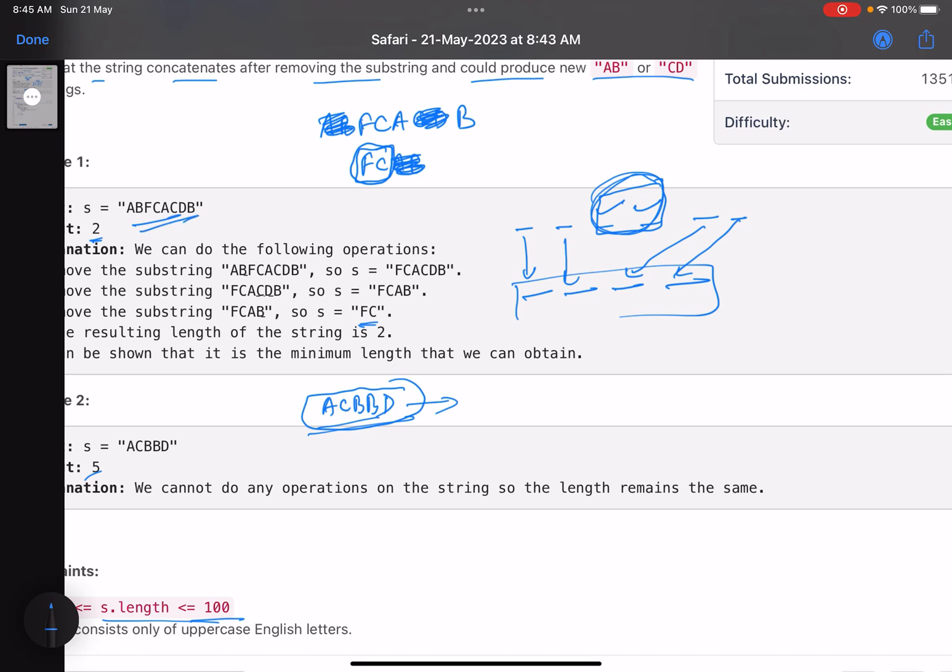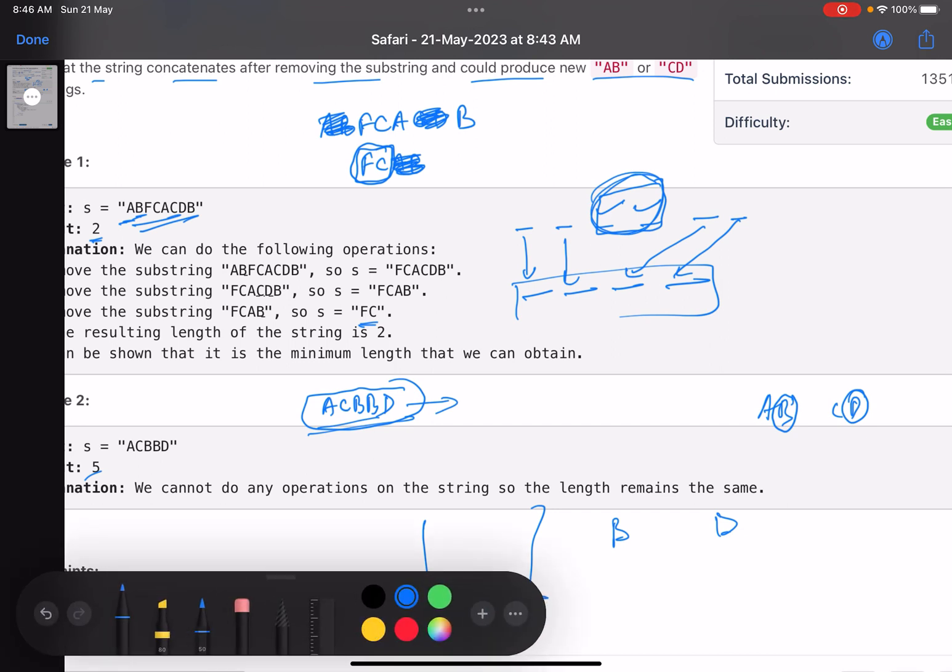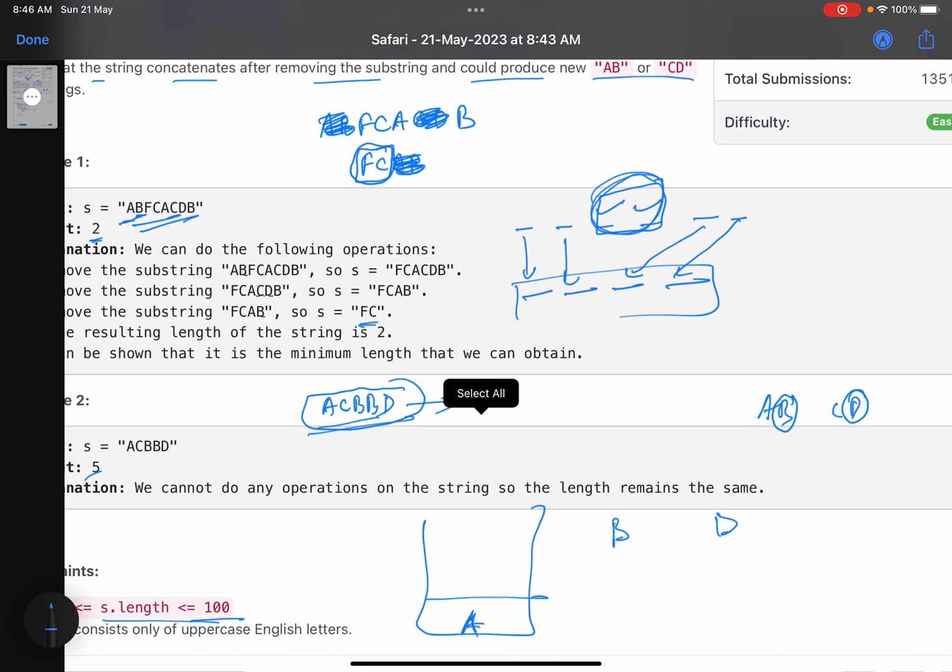This is my stack. The first character is A, I push A. There is only one character, I cannot remove any combination. The second character is B. So whenever I receive either B or D, because I can remove either AB or CD, I check what is the topmost character. In this case I'm getting a B, so I'll check what is the topmost character. It is A, so this B and this A form a combination and I remove it. My stack becomes empty.